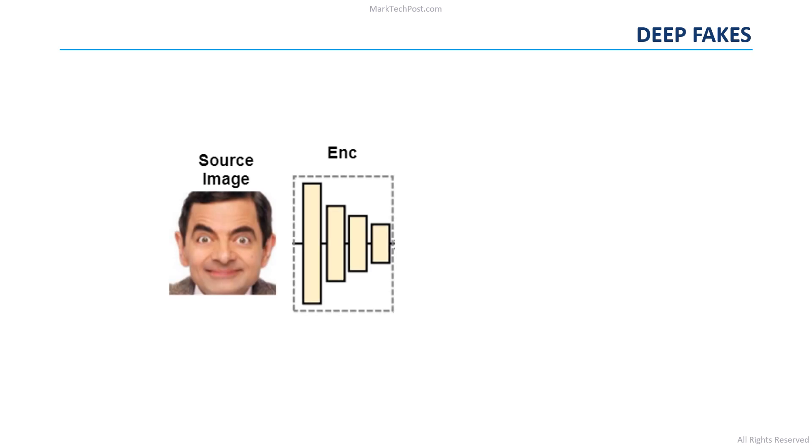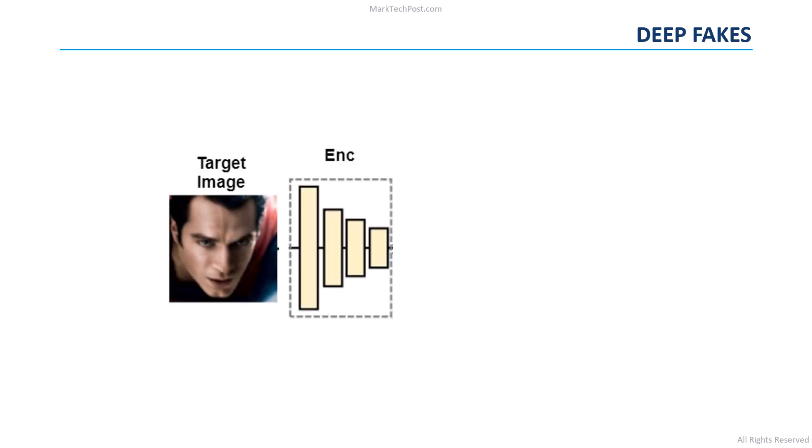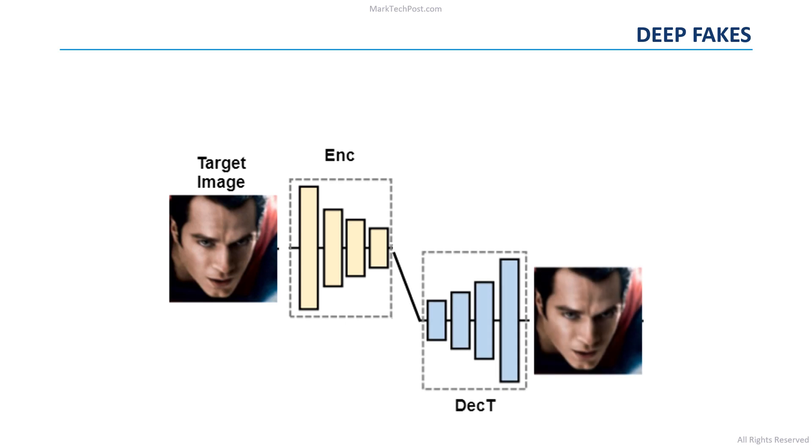The framework proposed in this paper extends an existing face swapping architecture called Deepfakes. The architecture of Deepfakes consists of two parts: an encoder enc and two identity-specific decoders, deckS and deckT. During the training stage, the encoder enc takes as input the source images and restores them through decoder deckS. The same procedure is applied to the target images — the encoder enc takes the target images and restores them through decoder deckT.